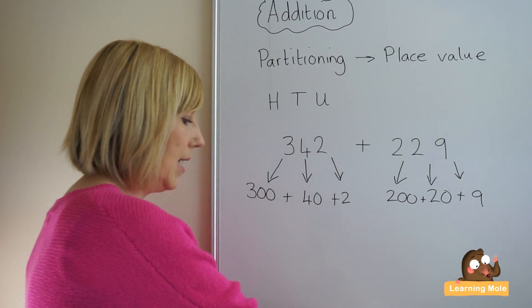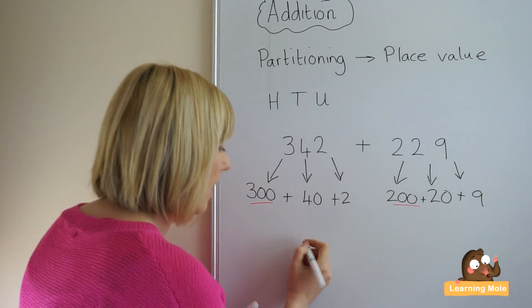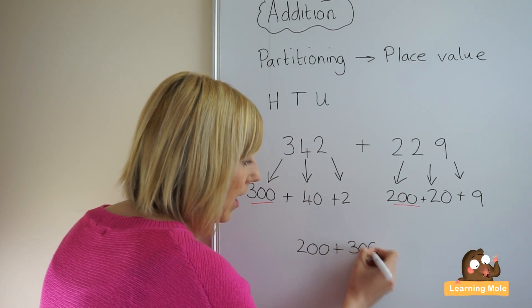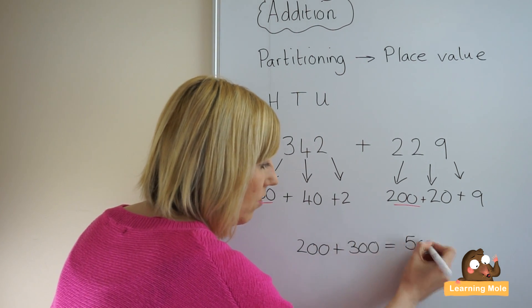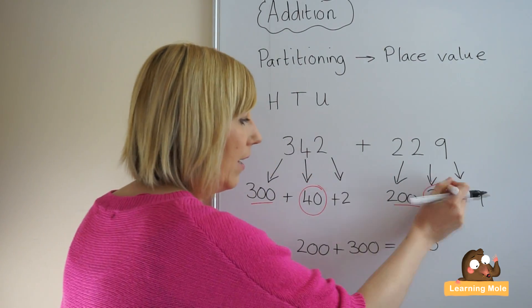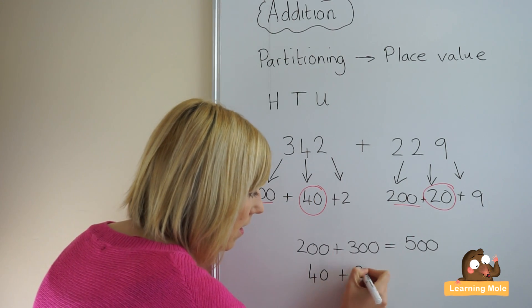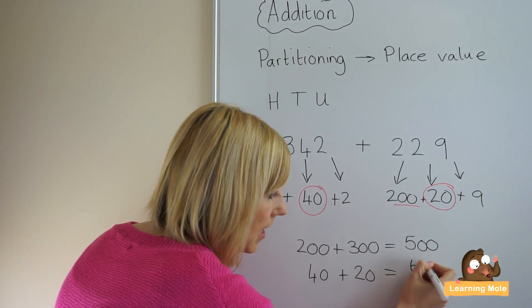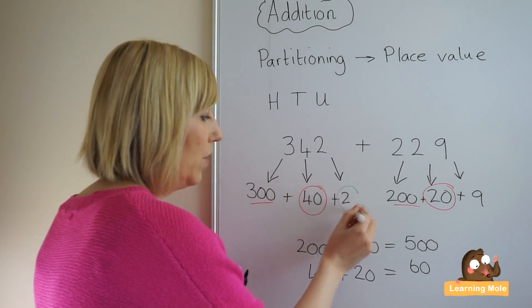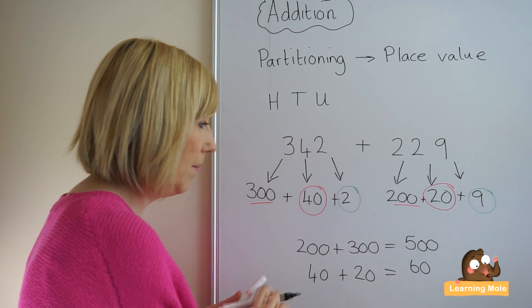So here we can see we have our 300 and we have our 200. So we're going to write that calculation down below 200 plus 300. And that makes 500. We've got our 40 and our 20, which are our tens, which of course makes 60. And then we have got our units, two units and nine units. And we will write those down below as well.